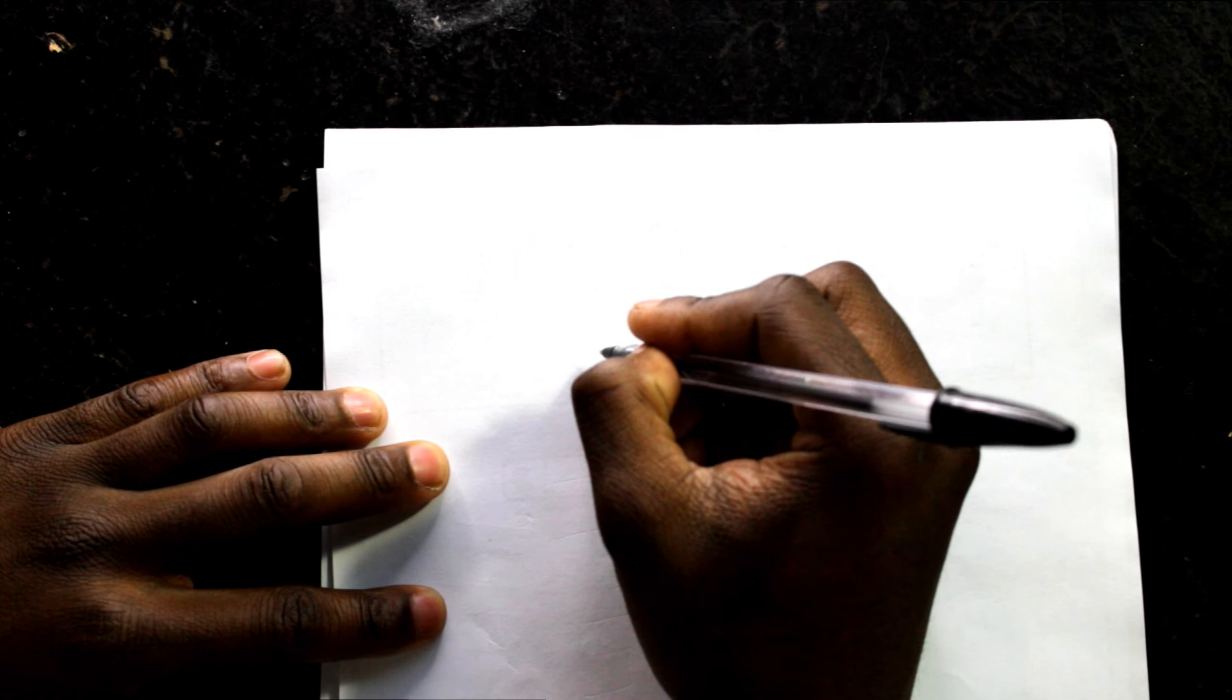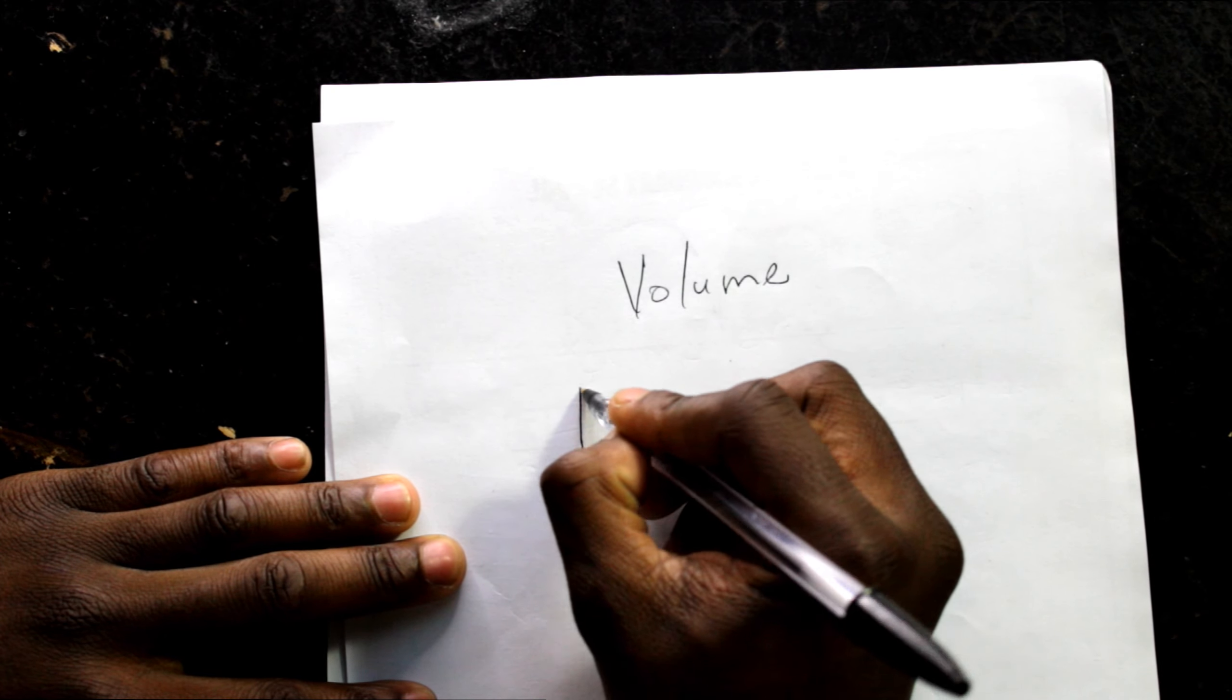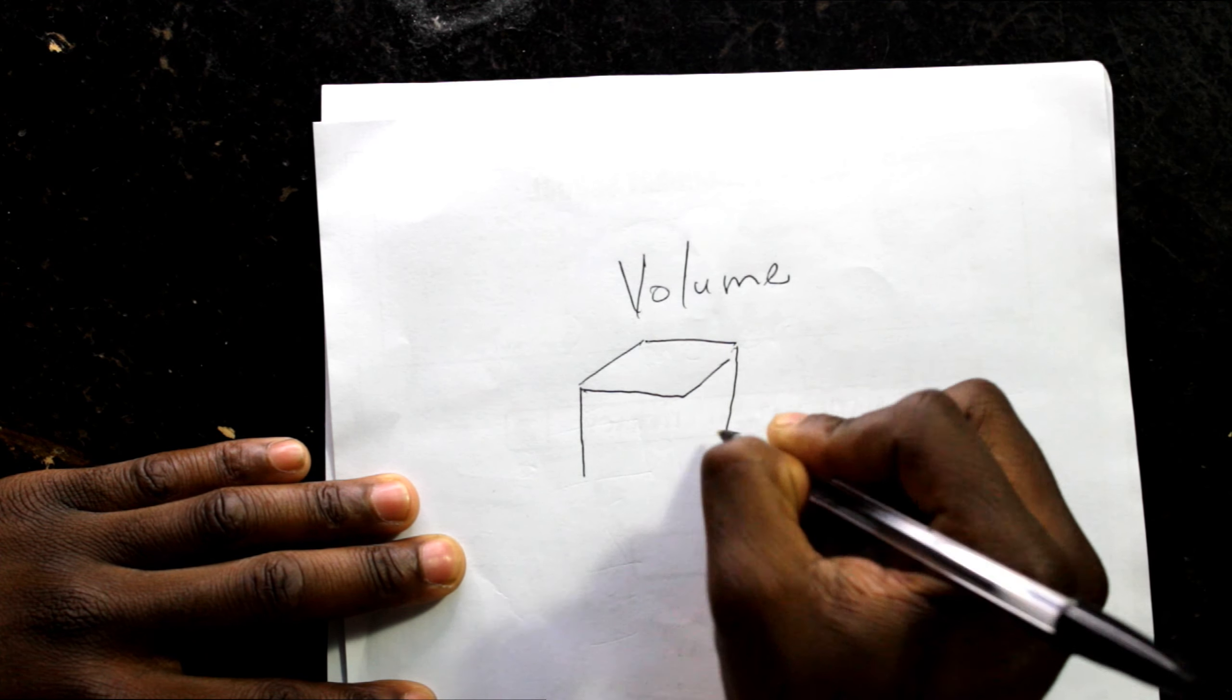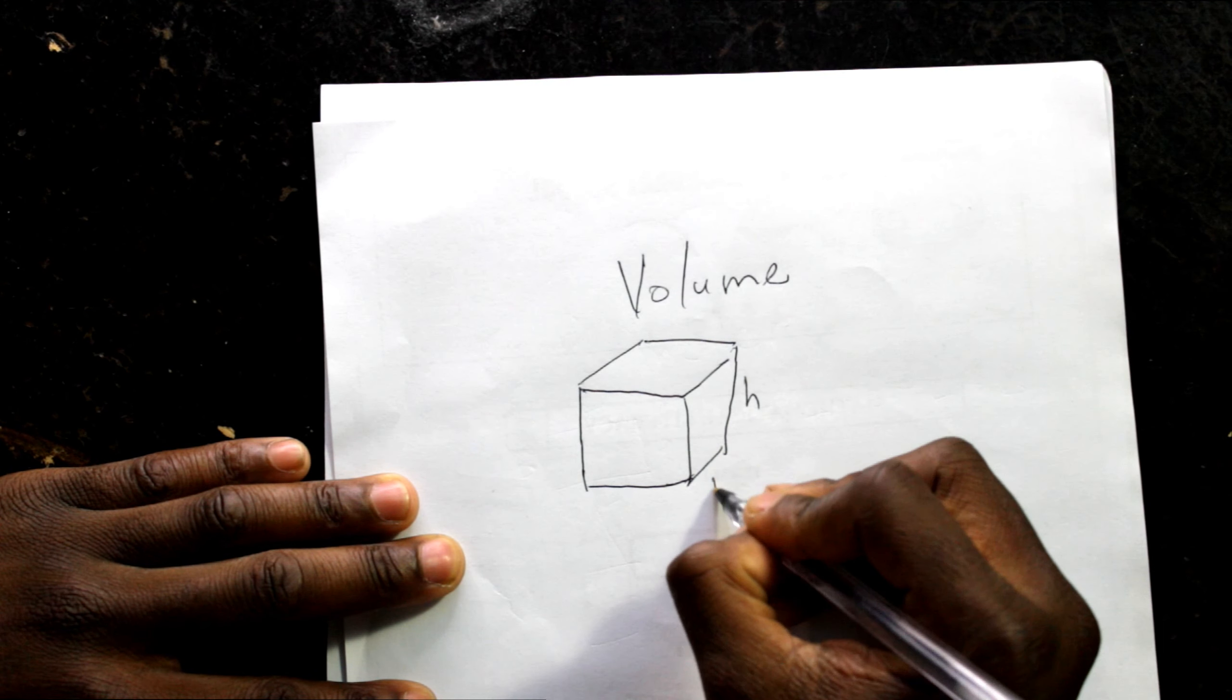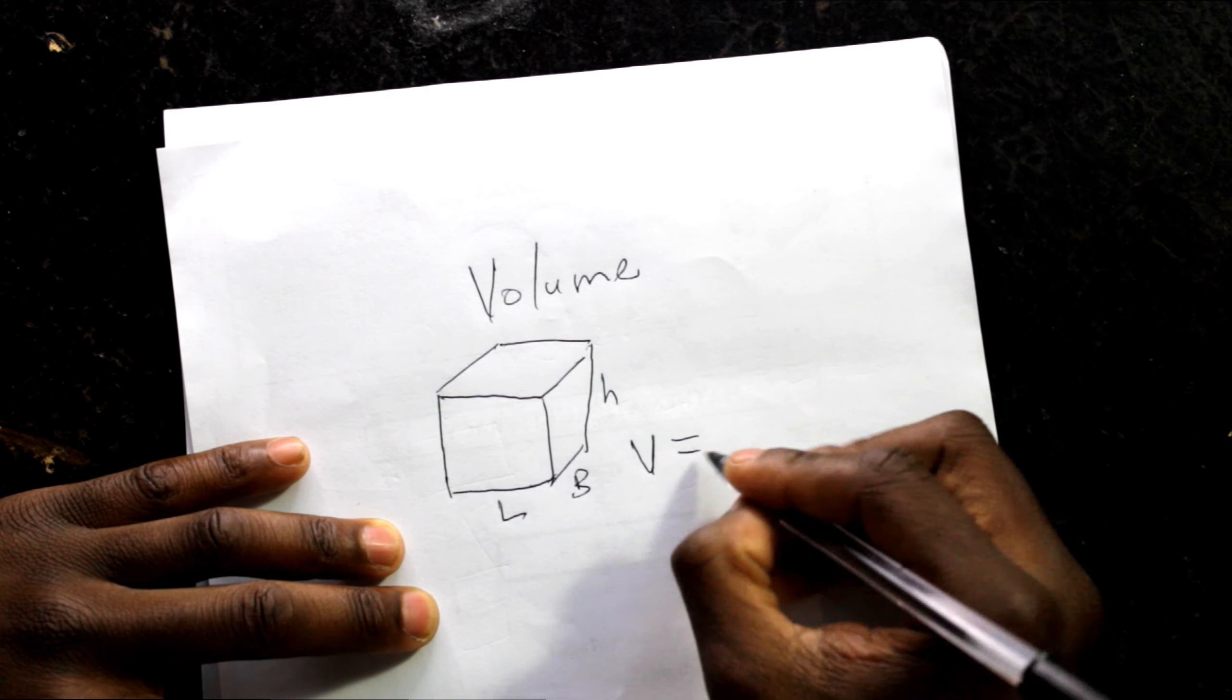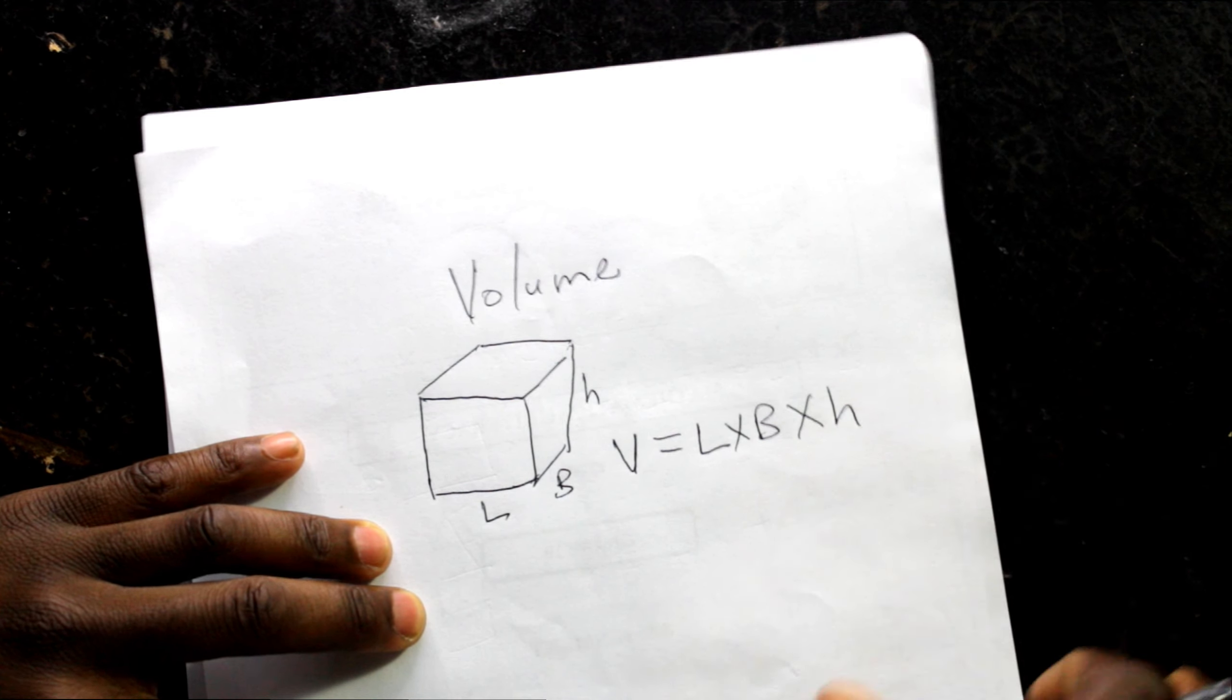For the formula for volume. A volume is a space which you put inside a three-dimensional shape. If we have a box with height, breadth, and length, the volume will say length times breadth times height.